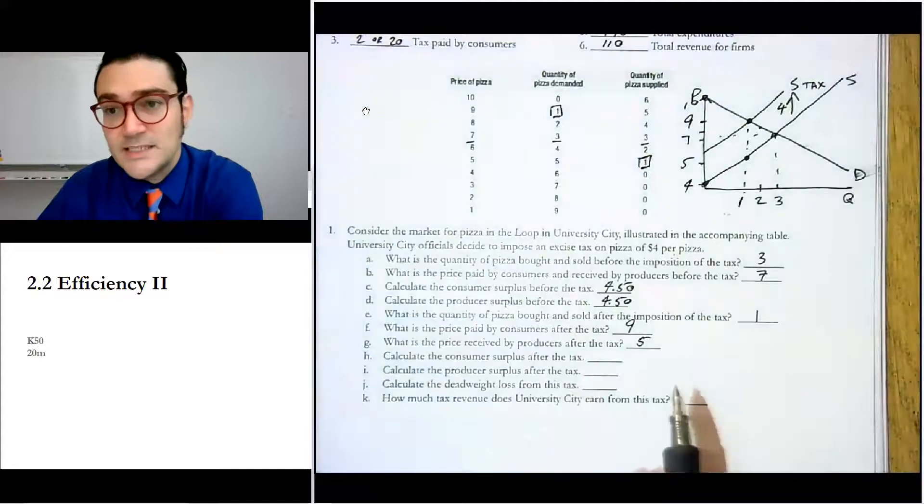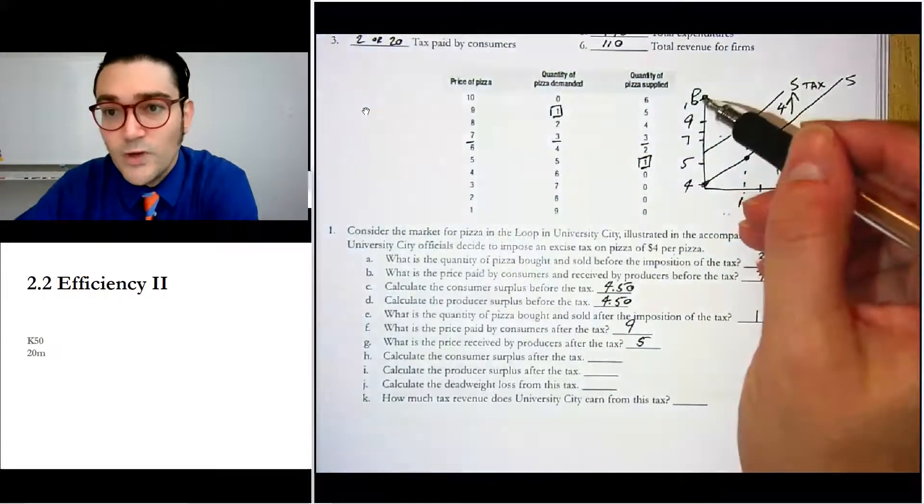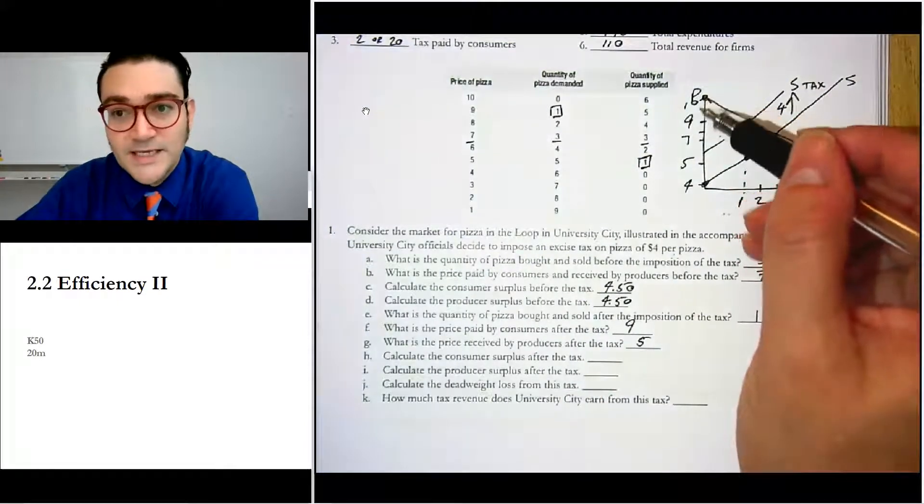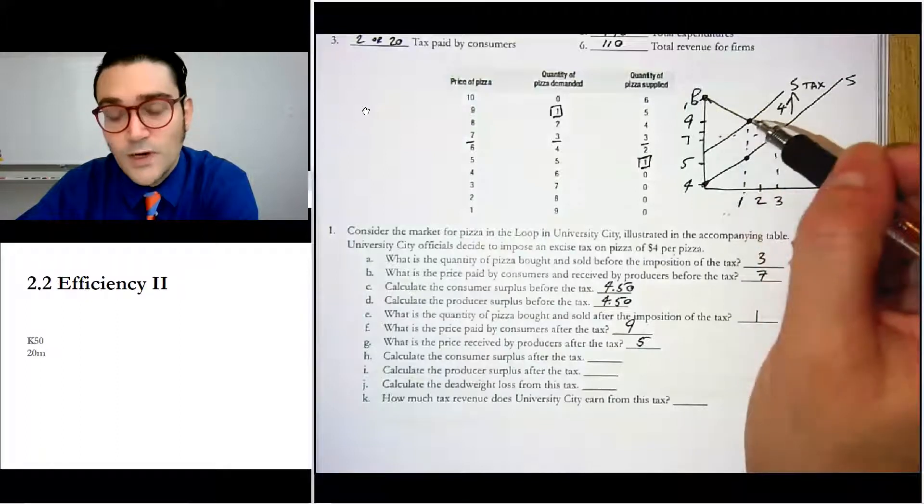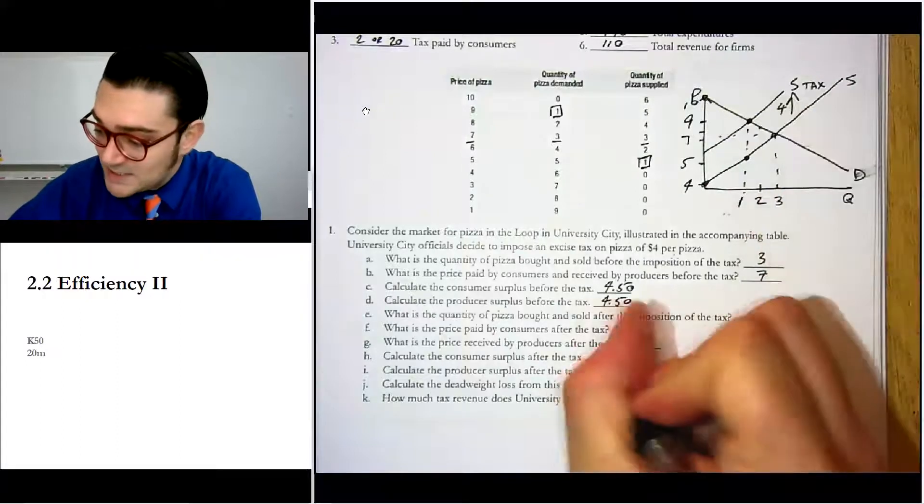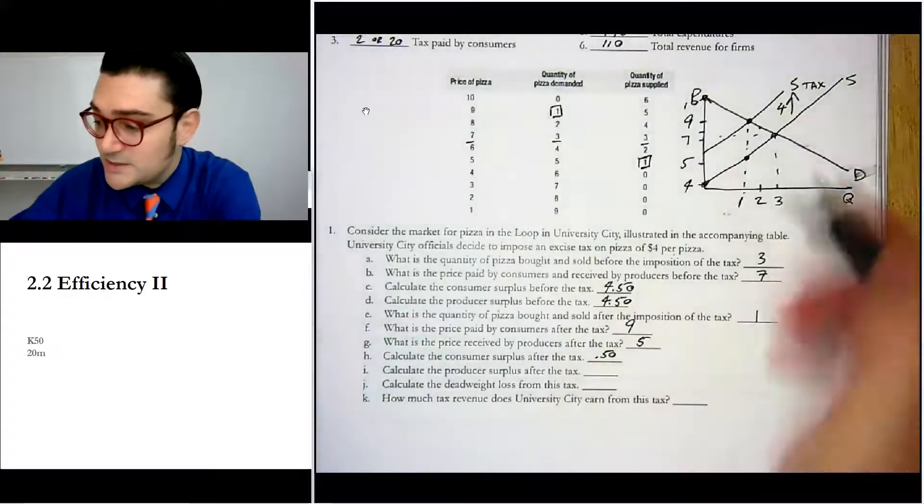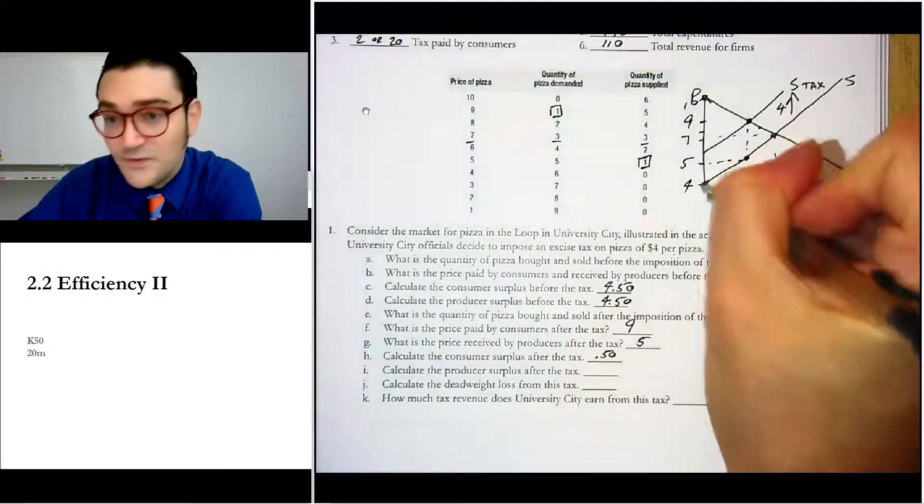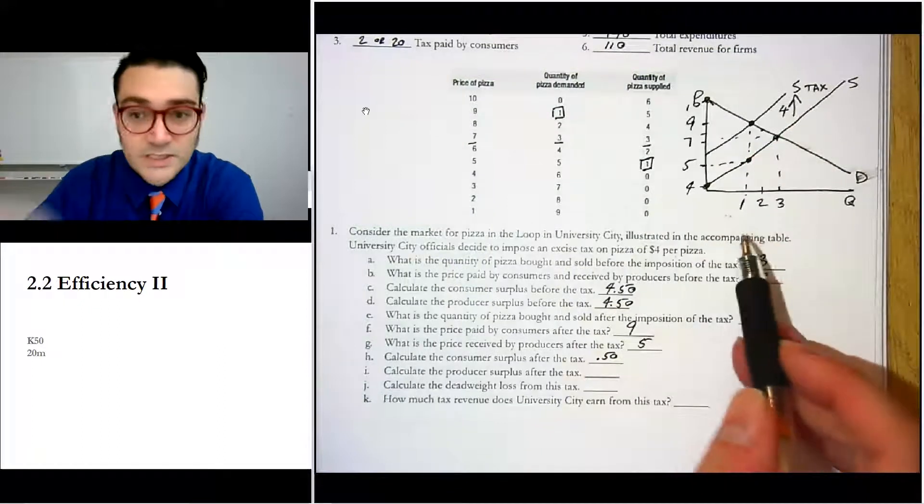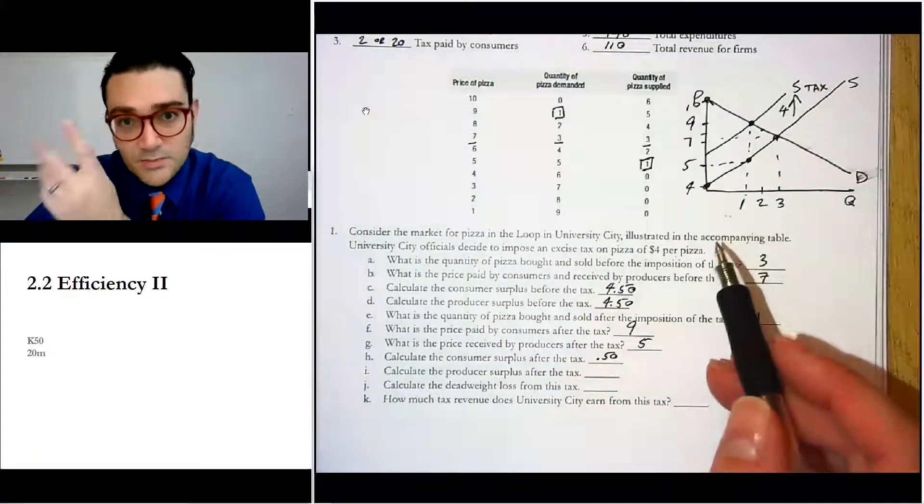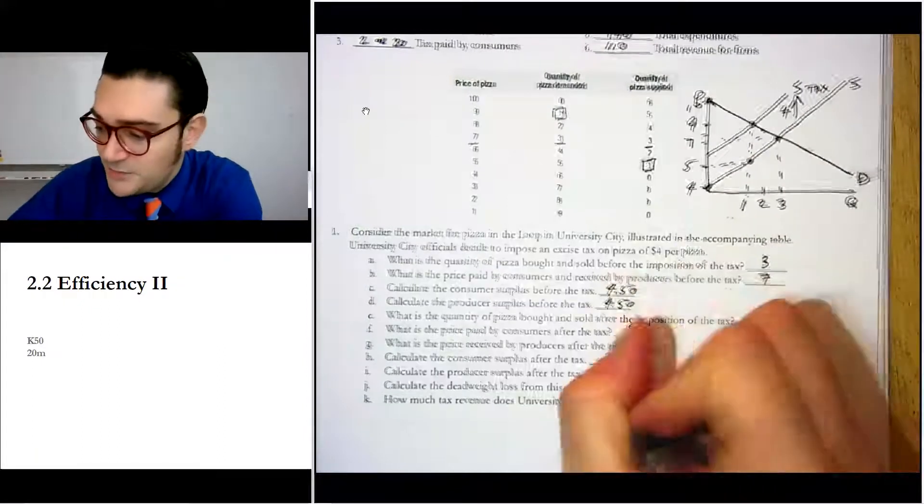Calculate the consumer surplus after the tax. Well, there's only, you know, one dollar is the height now because we go from ten dollars to nine dollars and then over to one. So it's only fifty cents of consumer surplus. Producer surplus is going from five dollars to four dollars and then over to one. So the height of the triangle is one dollar times the base is one. And again, divide by two, fifty cents.